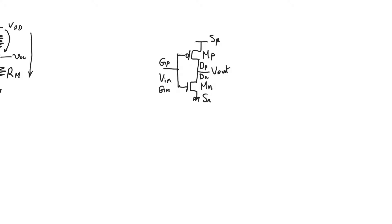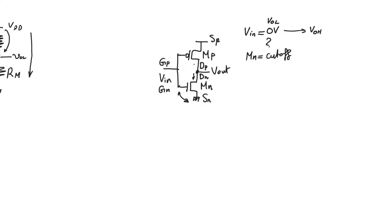Like any inverter, let's find the values of V_output_high and V_output_low. To find V_output_high, we use V_input = 0V. With V_input = 0V, the NMOS is cut off because VGS for the NMOS equals V_input, which is less than V_threshold. Applying KCL at the output node, the current in the PMOS equals the current in the NMOS, which is zero. So there is zero current flowing.